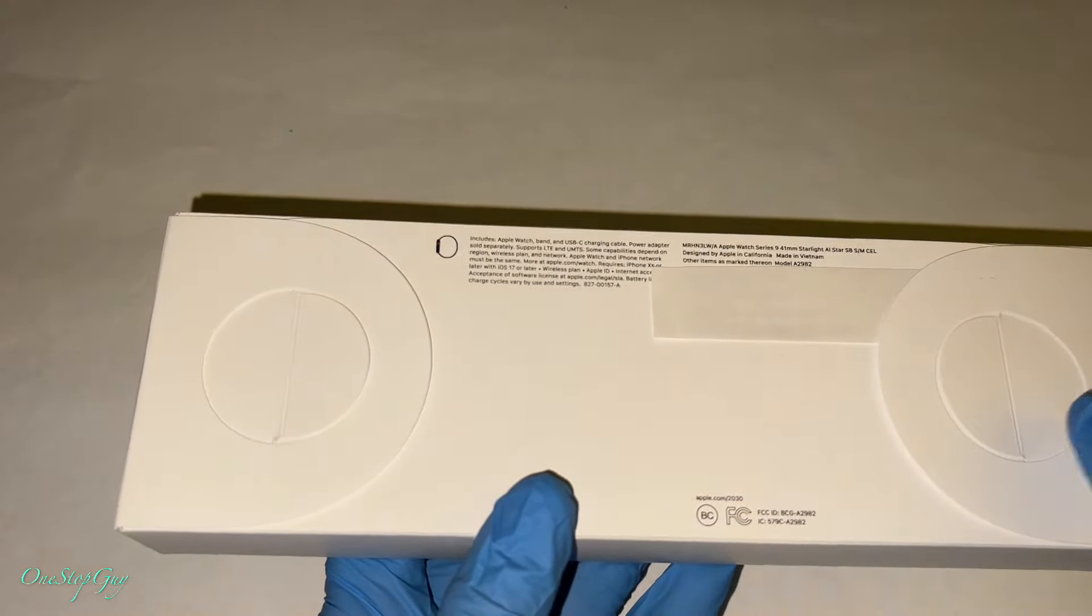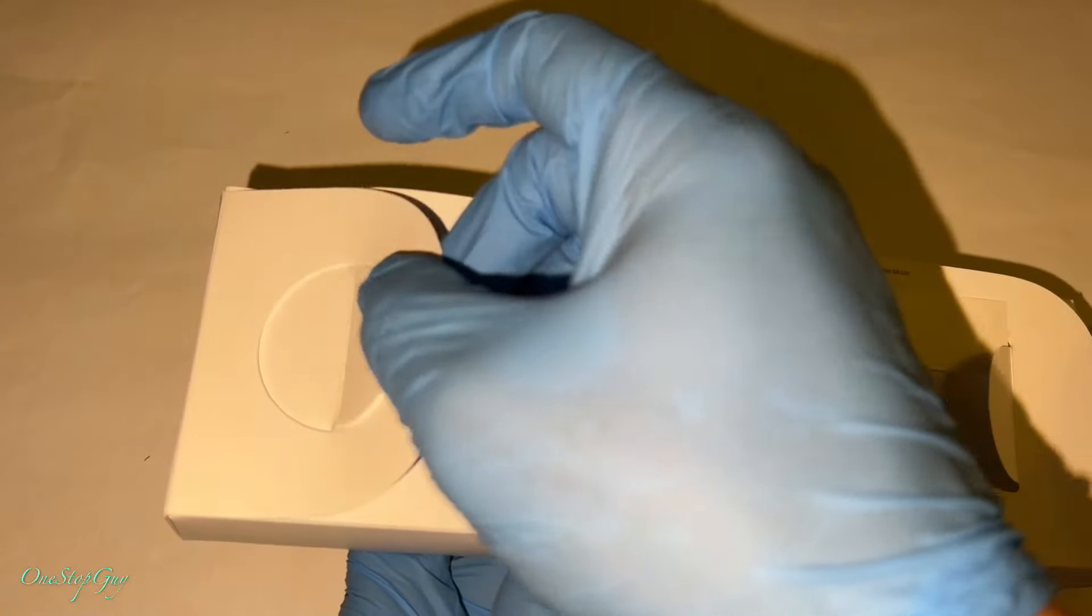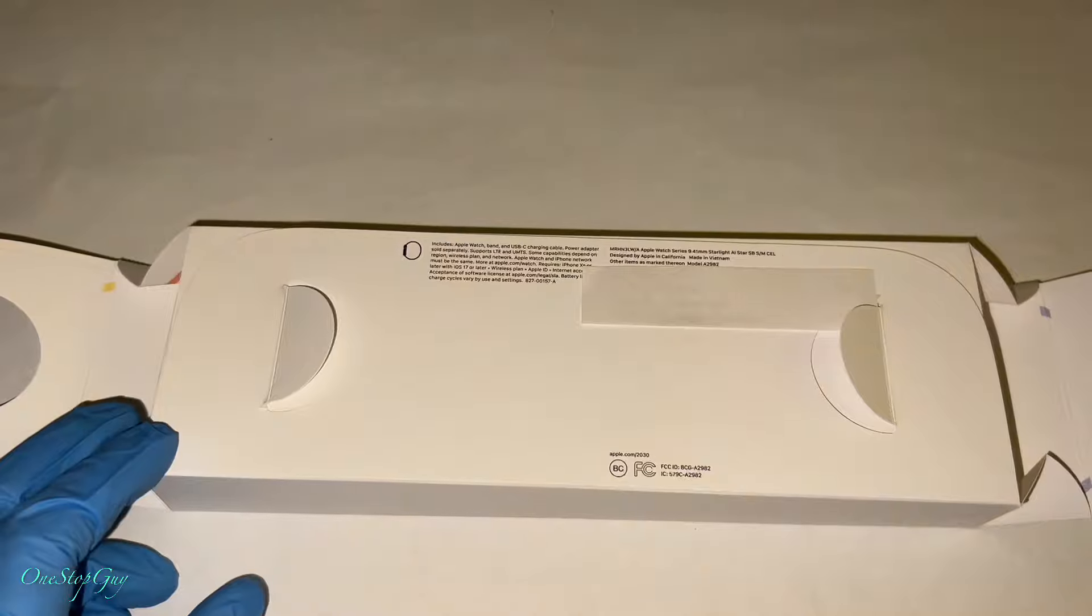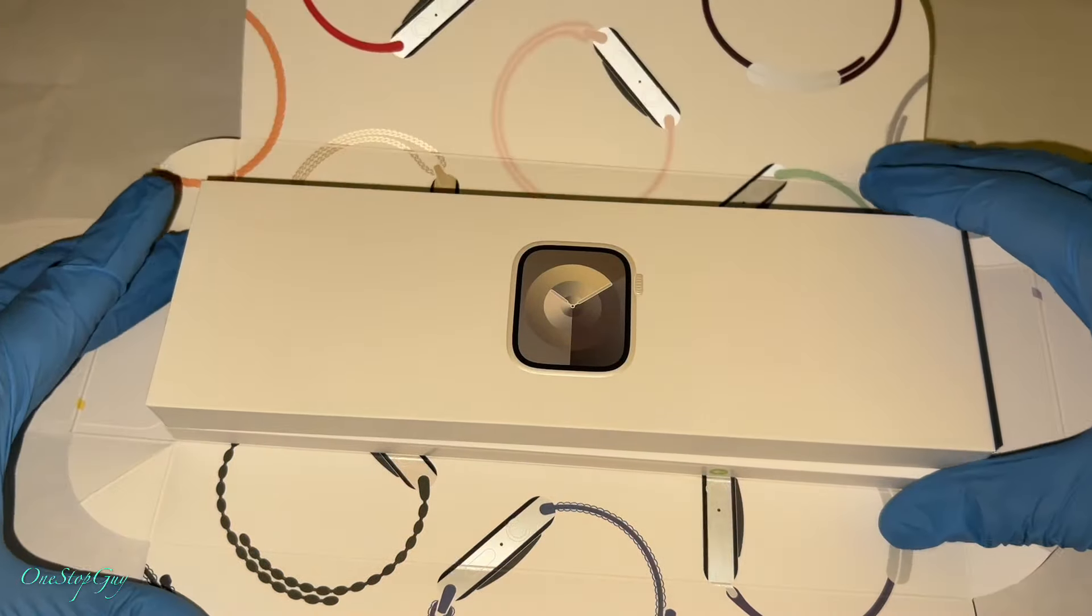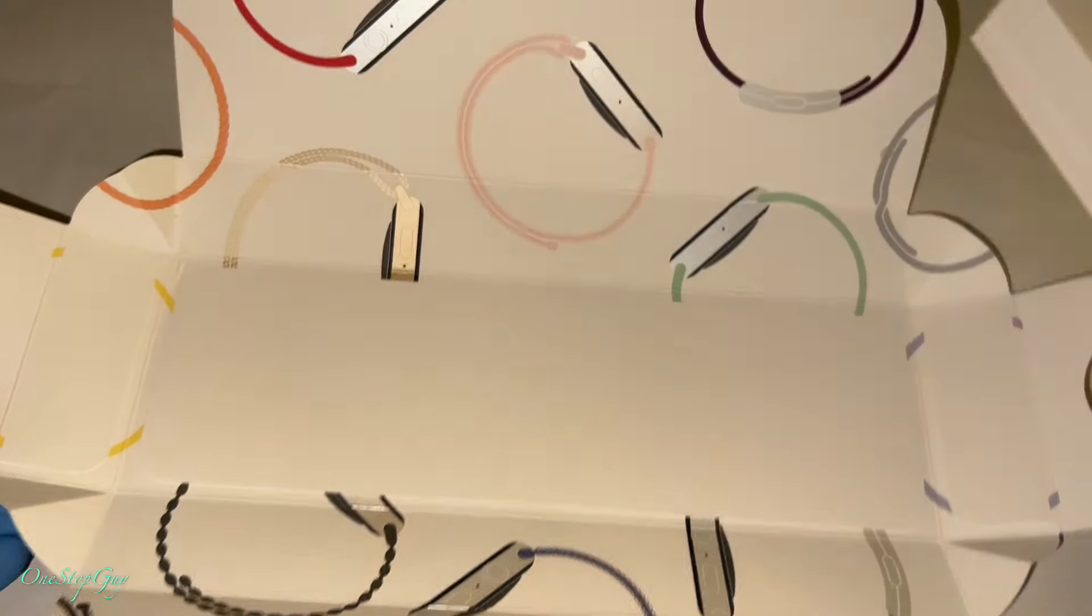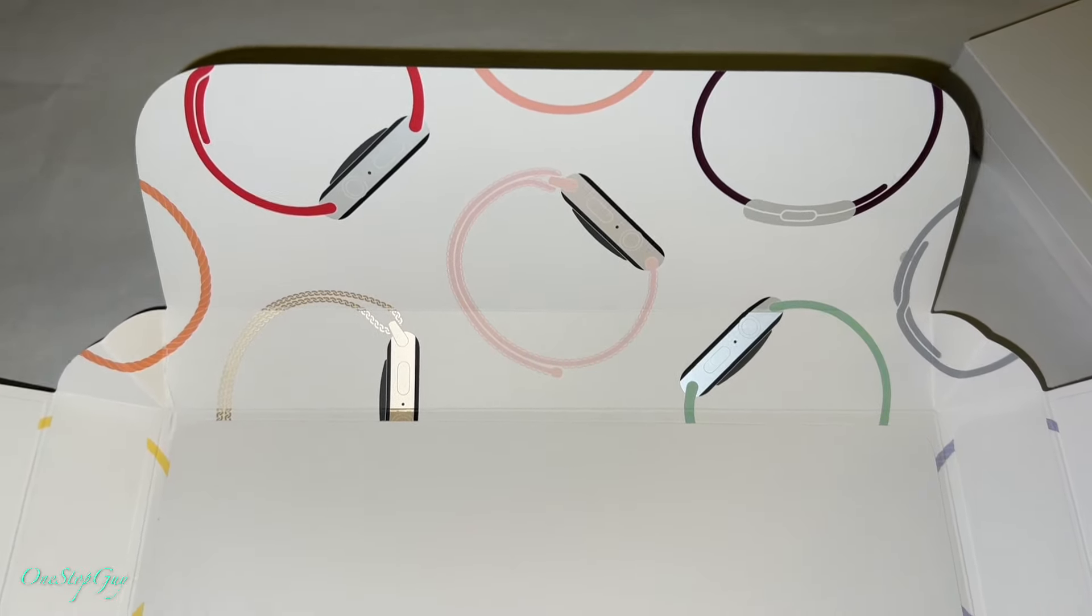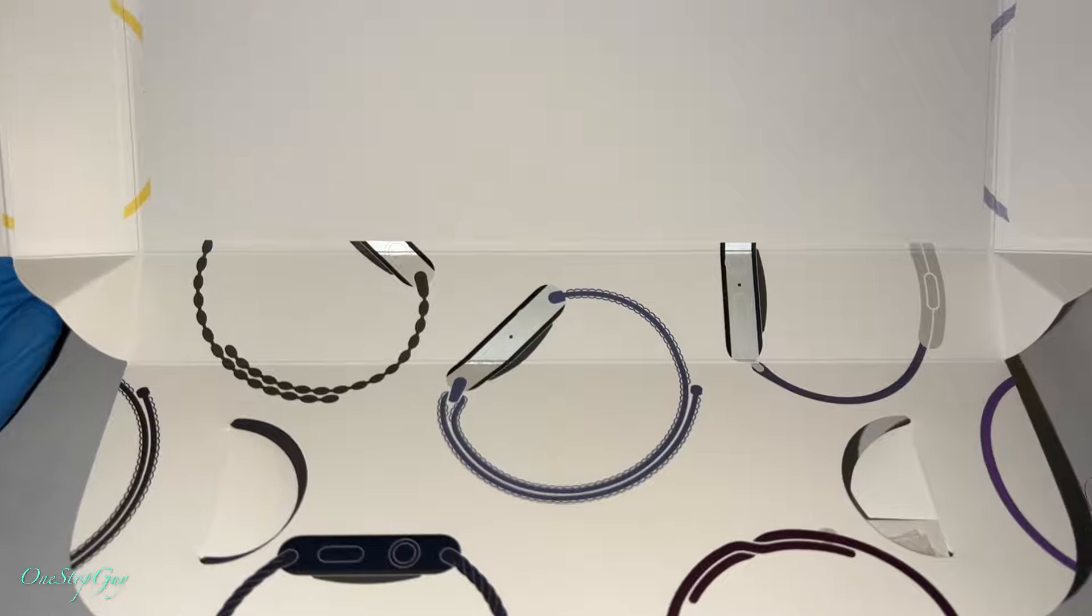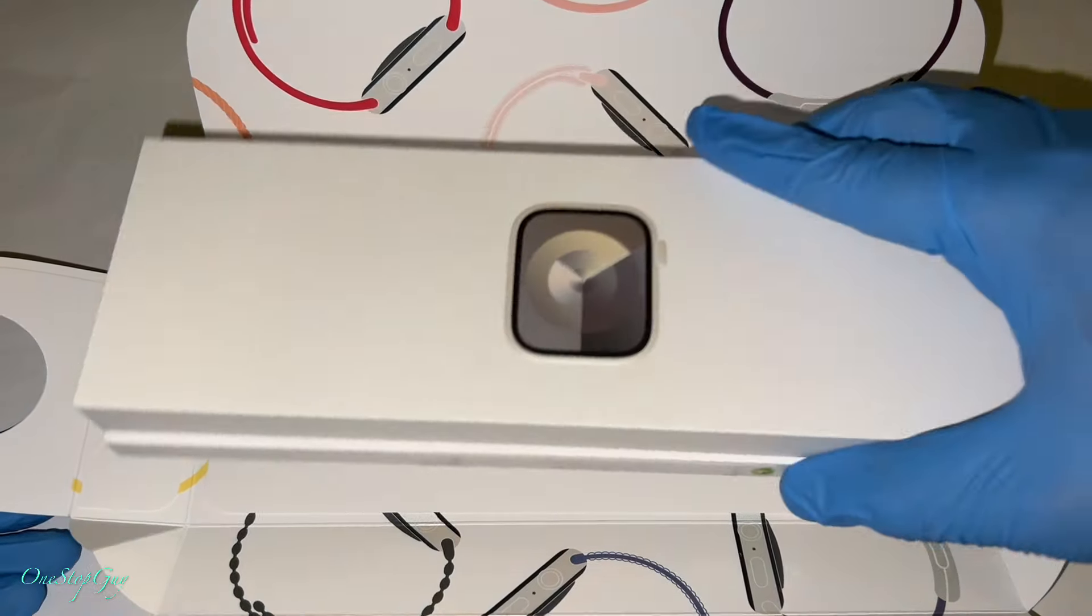Pretty straightforward, you got the two tabs right here. All you gotta do is just go like this, pops right open. Once you open it up, looks really nice. They got the decorations right there on the box. As you guys can see, they got multiple colors basically letting you know what type of color bands are available and all that stuff, but ours is going to be the starlight which is the white one.